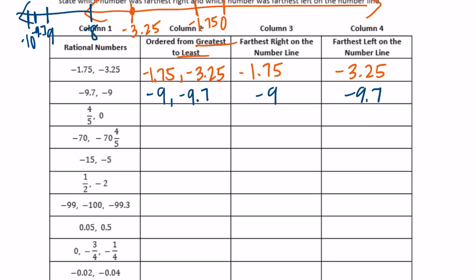4 fifths and 0. The greater number here is 4 fifths and then 0, because 4 fifths is greater than 0 on a number line. 4 fifths might be right there, especially because it's positive, so it's going to be greater than 0 if it's a positive number. Furthest to the right is 4 fifths. Furthest to the left is 0.